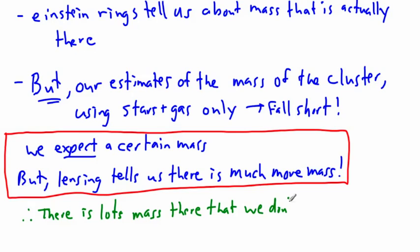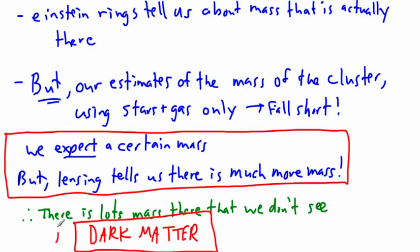We can't actually see it. What could that mass be? That's what we call dark matter - regular mass in that it attracts, but we can't see it. We don't know much about it. There's lots of mass there that we can't see, so we call it dark matter. That's another piece of evidence.